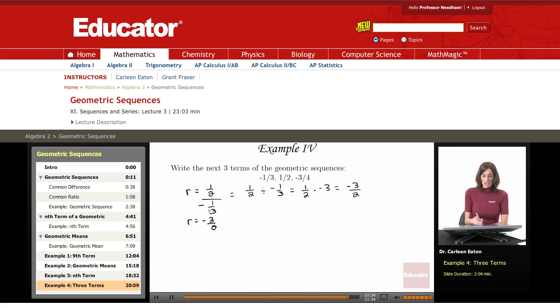Now that I have the common ratio, I can find the next three terms. So we stopped with the third term. I'm looking for the fourth term, the fifth, and the sixth. So the fourth term is going to be equal to negative three-fourths times negative three-halves. This is just going to be nine-eighths.